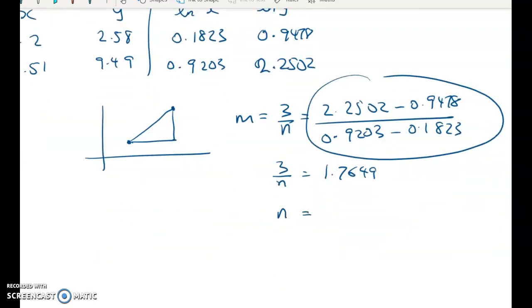So n is equal to, what have we got? n is equal to 3 over that. n is equal to 1.699785. So that's looking pretty good. It looks like a nice run 1.70 to 2dp.